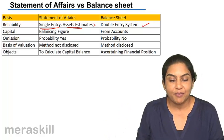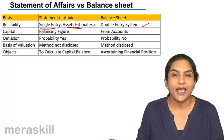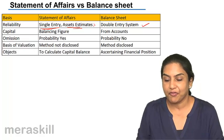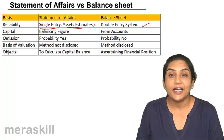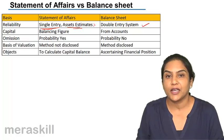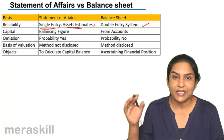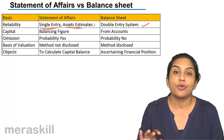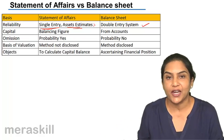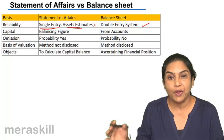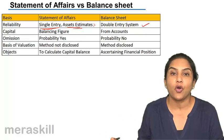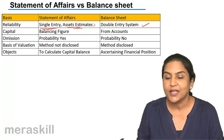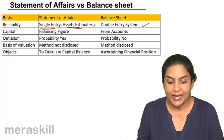Capital: under a statement of affairs, the capital is the balancing figure. But in a balance sheet, it comes from all the accounts we prepare. The capital account is also an account that we prepare, so there is no balancing figure as such in the balance sheet. When we bring forward all the balances of assets and liabilities, the balance sheet will tally.